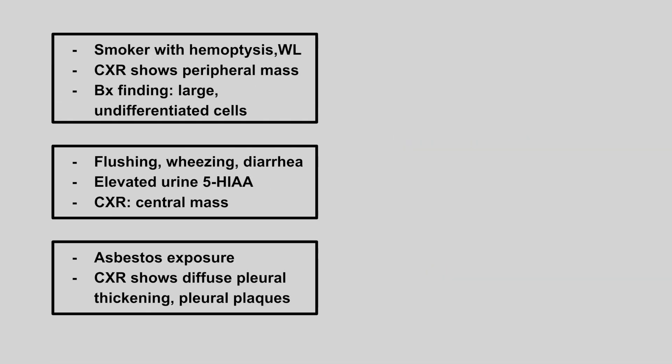Now we have a smoker presenting with hemoptysis and weight loss. Chest x-ray shows a peripheral mass, and biopsy shows large undifferentiated cells. This is a large cell carcinoma.